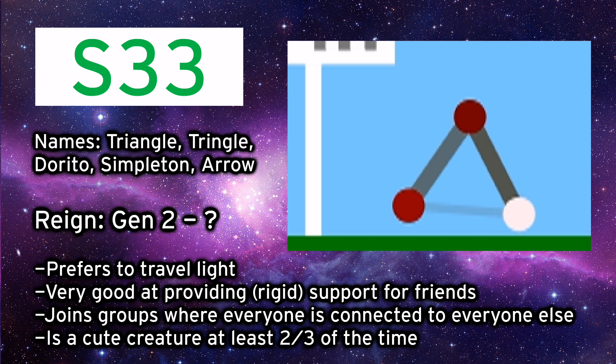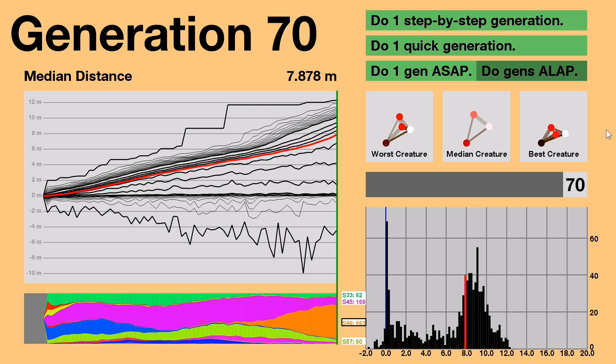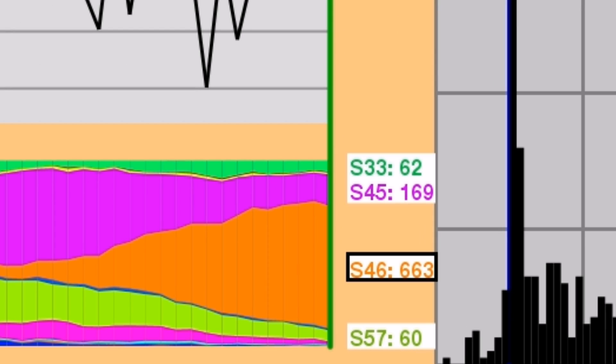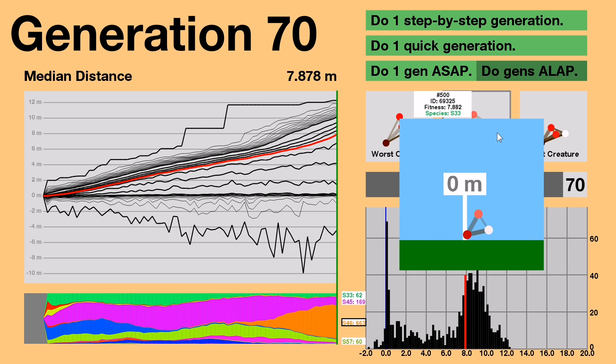Everyone forgot that Tringle still existed, but it's been holding on with a steady 6% this whole time. You can see that it's the median creature for generation 70, so it's still in the game.